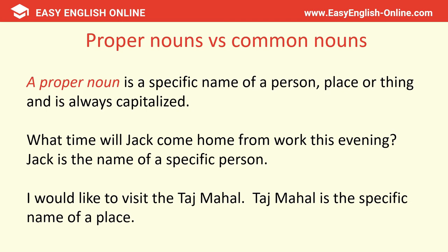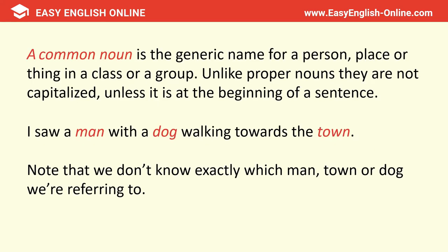We have proper nouns and common nouns. A proper noun is a specific name of a person, place, or thing and is always capitalised — for example, Jack in 'What time will Jack come home from work this evening?' or Taj Mahal in 'I would like to visit the Taj Mahal.' A common noun is a generic name for a person, place, or thing in a class or group. Unlike proper nouns, they're not capitalised unless at the beginning of a sentence — for example, 'I saw a man with a dog walking towards the town,' where we don't know exactly which man, town, or dog we're referring to.